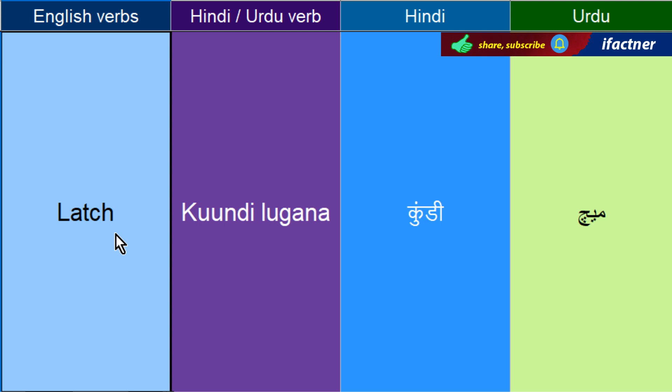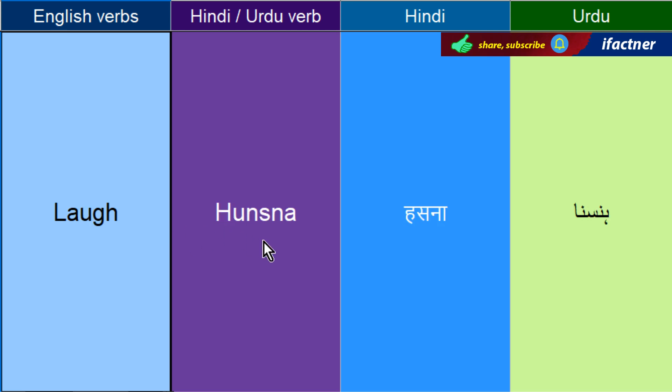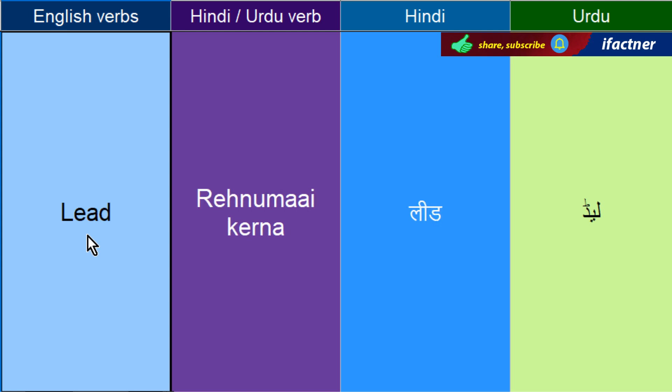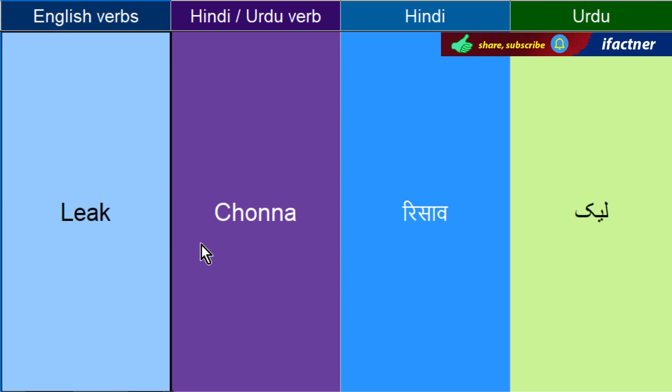Woh jo purani zameen mein badi si chain waali kundi hoti thi, usko kehtay hai Latch. Hansnay ko — Laugh. Tum has kyoon rye ho? Why are you laughing? He is laughing — woh has raha hai. Latchanay ko — Lay. Rehnumaayi kerna — Lead kerna. Chowna, jis tarah paani chow raha hai, toh usko kehtay hai — Leak hona. The oil is leaking.